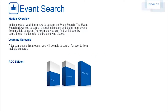In this module, you'll learn how to perform an event search. The event search allows you to search through all motion and digital input events from multiple cameras. For example, you can find an intruder by searching for motion after the building was closed. After completing this module, you'll be able to search for events from multiple cameras. This feature is available in these editions of ACC software.